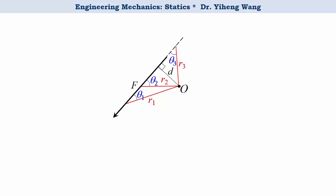And the moment can be determined to be F times R1 sine theta1, or F times R2 sine theta2, or F times R3 sine theta3. According to trigonometry, we know that R1 sine theta1 equals D, so as R2 sine theta2 and R3 sine theta3.